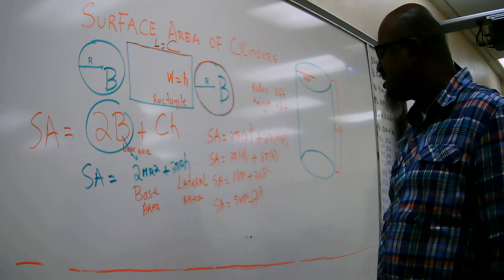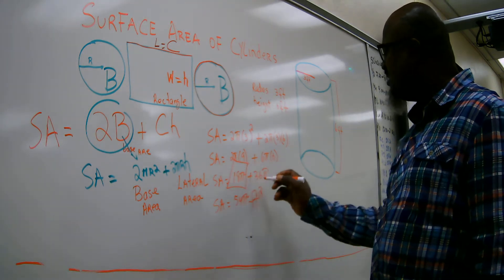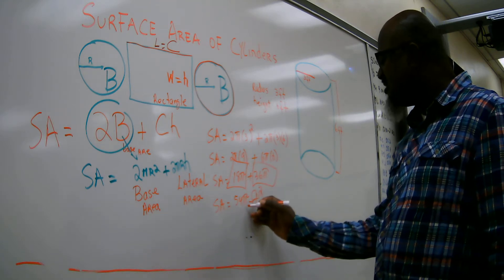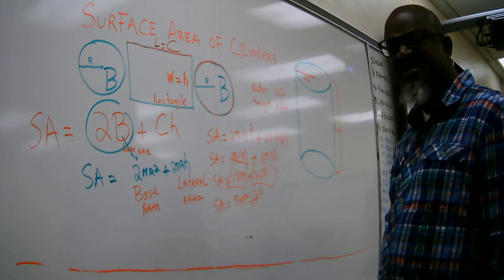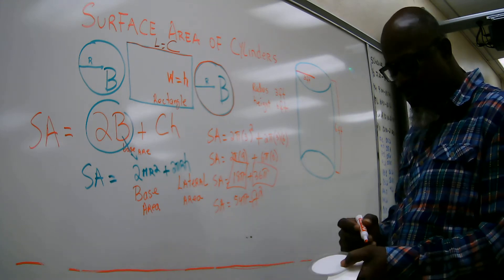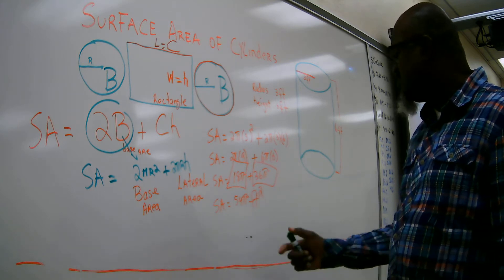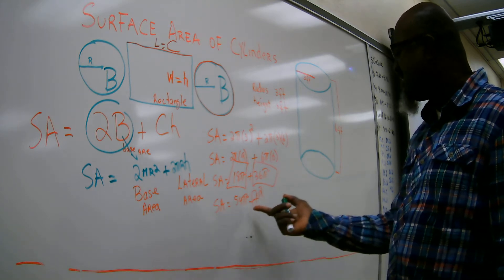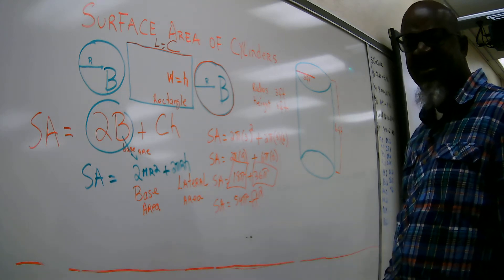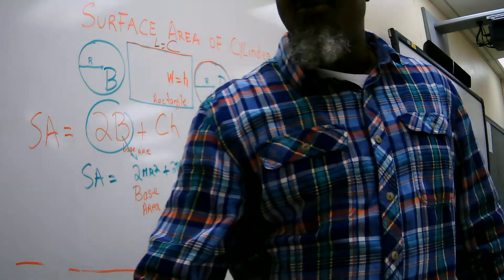We are going to simplify. Remember we do not replace pi unless they tell you what estimation to use — either 3.14 or 22 over 7. That will be one of the scenarios. We leave the answer in terms of pi.